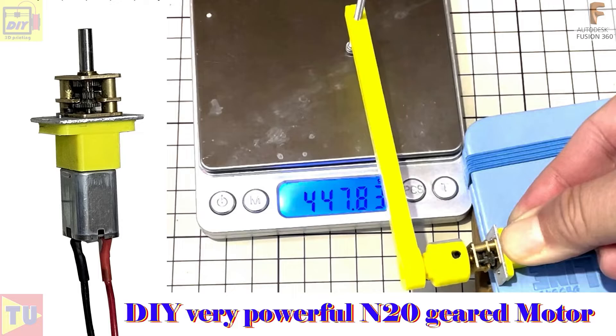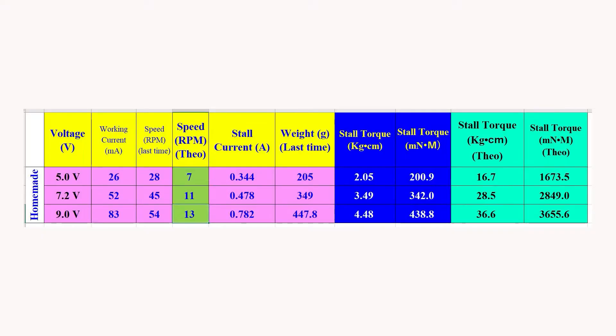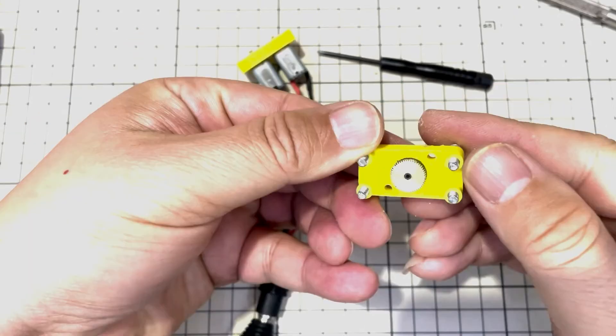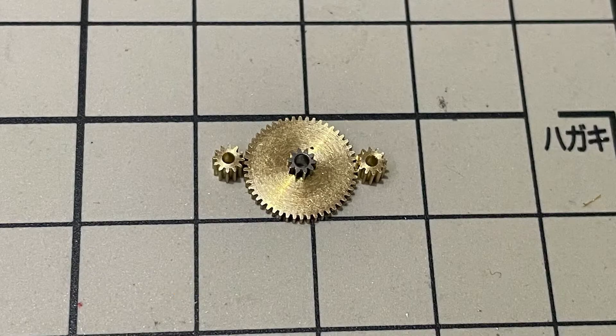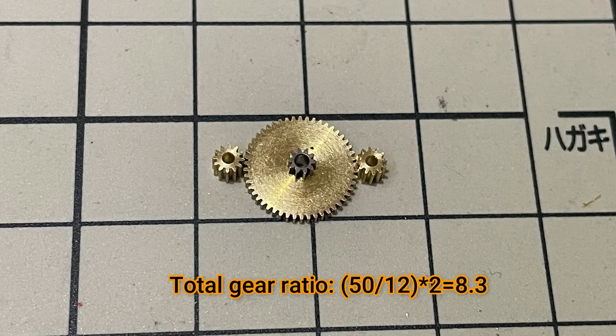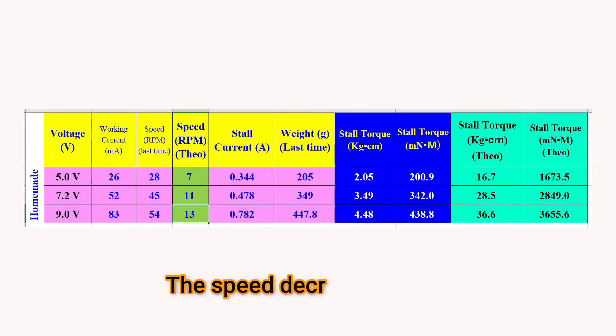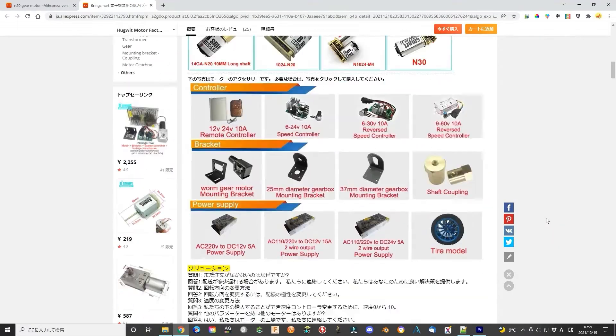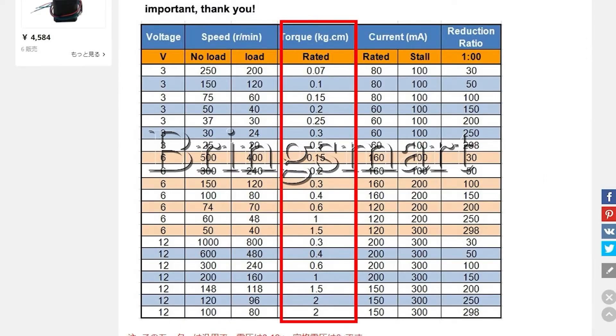As the last experiment results, the output of the torque is listed here. Since I use the geared configuration, the gear ratio is 4.16. The total gear ratio is about 8.3. The output torque can reach 36.6 kg-cm or 3.6 Nm. It is extremely high torque that no existing geared N20 motor can reach.